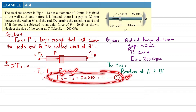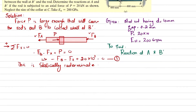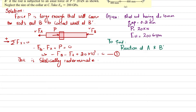Equation one has two unknowns, FA and FB, and we have only one equilibrium equation. So this is statically indeterminate — we cannot find FA and FB using this equation alone. We need to go to the compatibility equation.